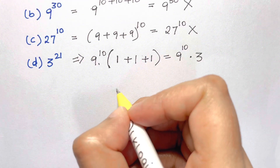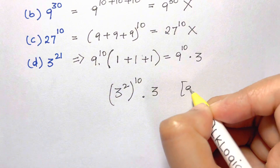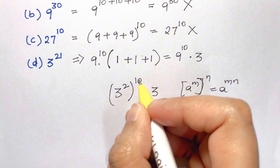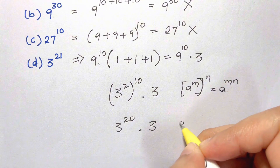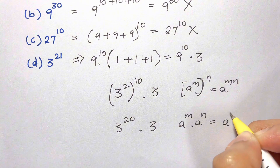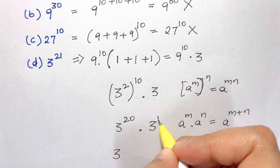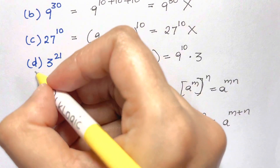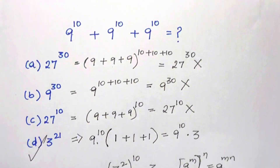Now, 9 can be written as 3 squared, so we have (3 squared) to the power of 10 times 3. Using the power-to-power rule — multiply the exponents — that gives 3 to the power of 20 times 3. Using the rule for multiplying same bases — add the exponents — 3 to the power of 20 times 3 to the power of 1 equals 3 to the power of 21. That is the correct answer: D, 3 to the power of 21.